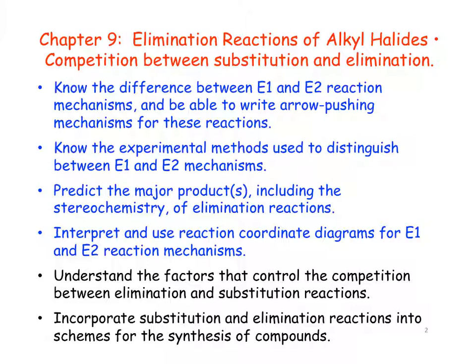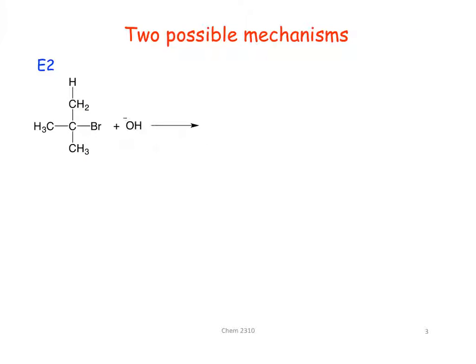So we're going to learn in eliminations, just to make things consistent. We have two different mechanisms that we're going to learn about, and they're going to have a lot of similarities to the SN1 and SN2. So these are called E1 and E2.